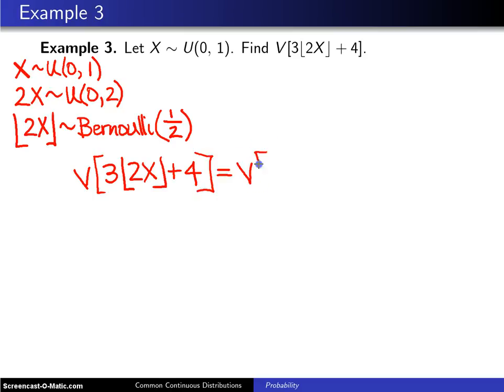First thing to recognize is that when you add 4 to a random variable, it does not change its variance. So you can simply just eliminate the plus 4 in this variance expression.